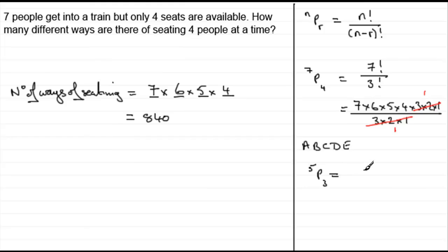And so that would be five factorial, N factorial, over N minus R factorial. Five take three is two, so that'd be two factorial. And this works out as five times four times three times two times one, all over two factorial, which is just two times one.